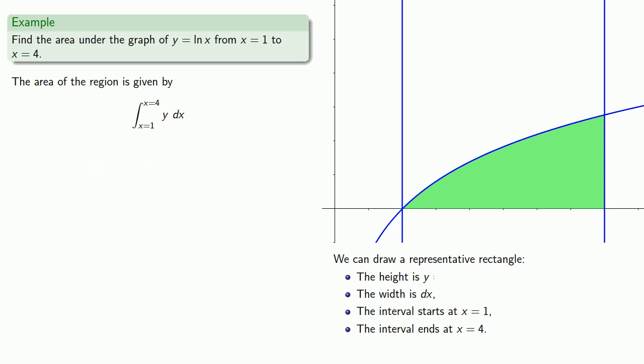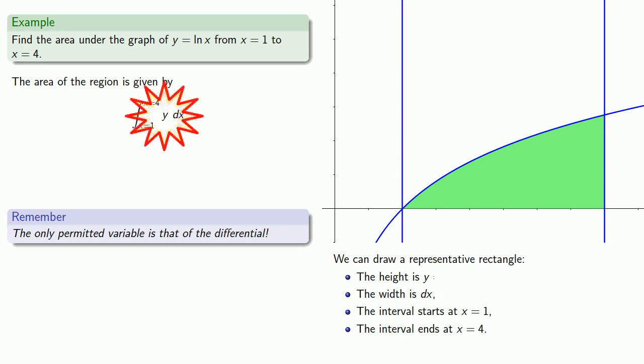At this point, we emphasize an important idea. The only permitted variable is that of the differential. In this case, our differential variable is x. And we're okay for this upper limit x equals 4 and this lower limit x equals 1. But y is not the permitted variable. Fortunately, we know that y equals log of x. So instead of writing y, which I'm not allowed to do, I can write log x. And now we can find the area by evaluating this integral.